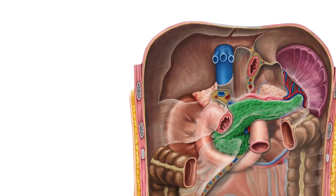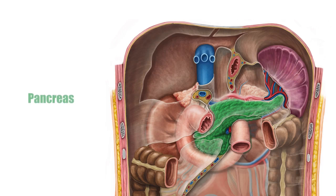The pancreas is an accessory organ of the gastrointestinal tract whose function is to release various substances that help regulate the blood content levels as well as digestion.